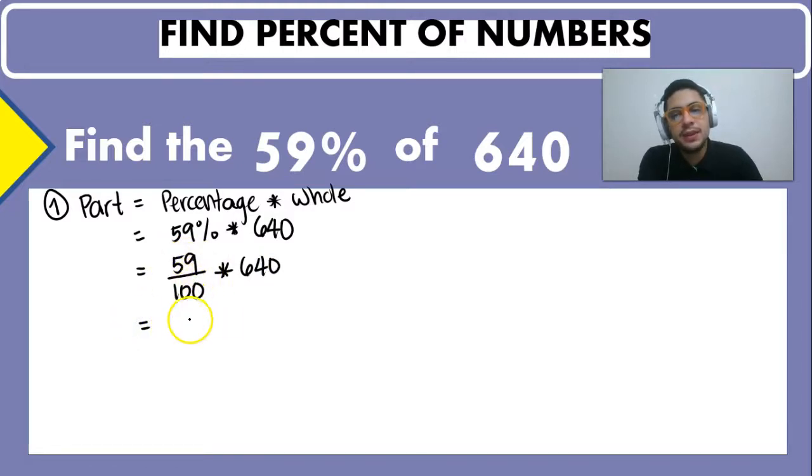You have to remember that 59 divided by a hundred is equal to 0.59 and then you just have to multiply by the number or the whole which in this case is 640. Whenever you do that multiplication you're gonna get that the 59% of 640 is going to be 377.6.